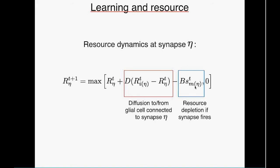Simulating this model numerically from different initial conditions and network configurations, we find that when the eigenvalue starts below one, it evolves toward lambda equal one — the network self-regulates to the critical point. Similarly, if the eigenvalue starts above one, it reaches one relatively quickly. The intuition is clear: if supercritical, heavy firing consumes resources, reducing synapse strengths and lowering the eigenvalue; if subcritical, little activity allows resource to accumulate until the eigenvalue reaches one.